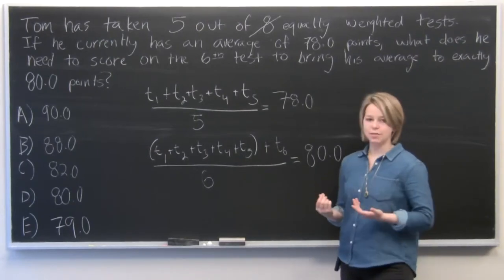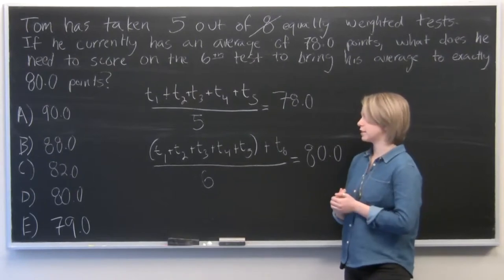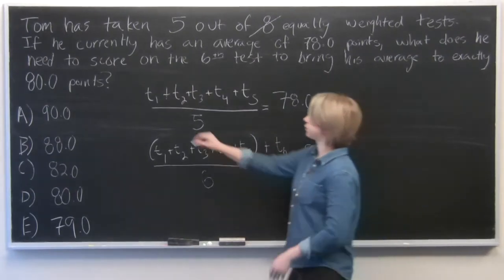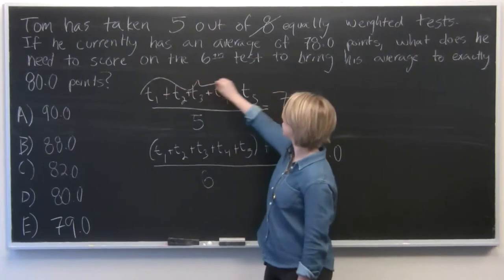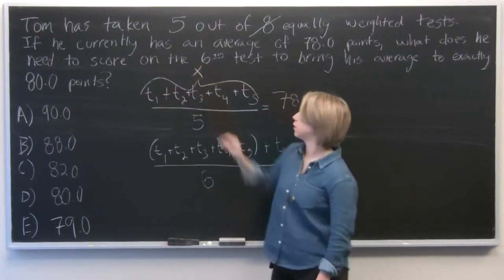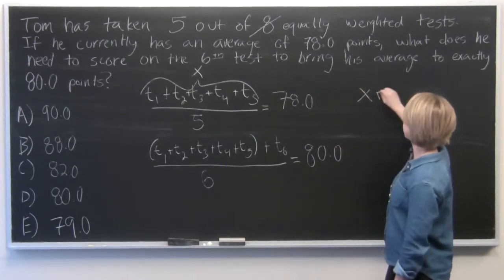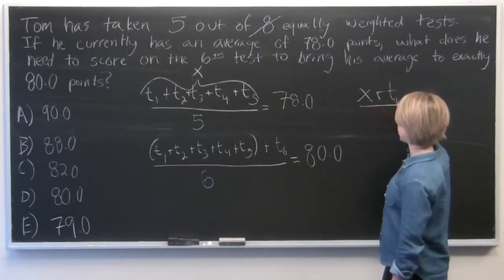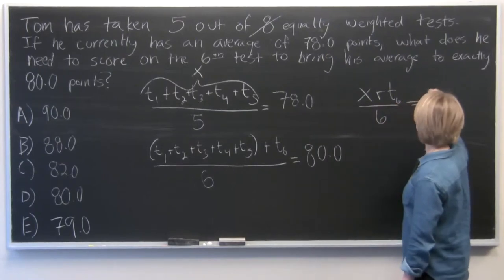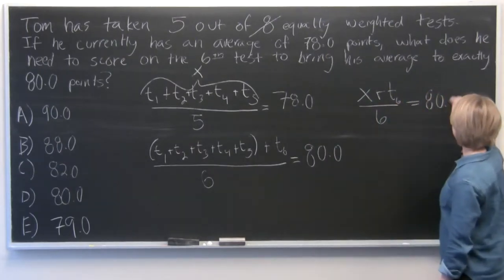So that's a lot of variables. To make this easier, we are going to substitute in an x for this sum here. So what we'll have is x plus T6 over 6 equals 80.0 points.